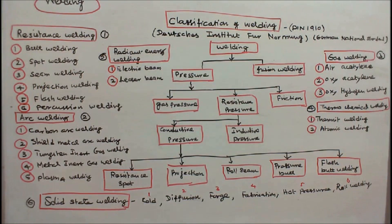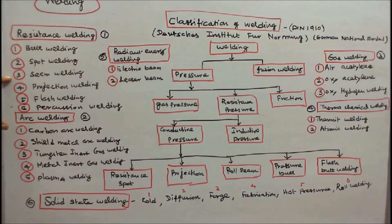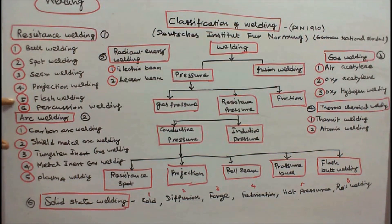There are six types of resistance welding: number one, butt welding; number two, spot welding; number three, seam welding; number four, projection welding; number five, flash welding; number six, percussion welding.